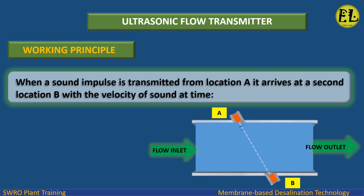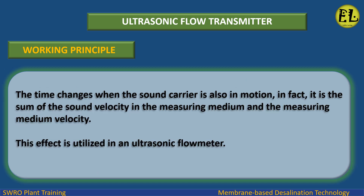When a sound impulse is transmitted from location A, it arrives at a second location B with the velocity of sound at that time. The time changes when the sound carrier is also in motion — in fact, it is the sum of the sound velocity in the measuring medium and the measuring medium velocity. This effect is utilized in an ultrasonic flow meter.